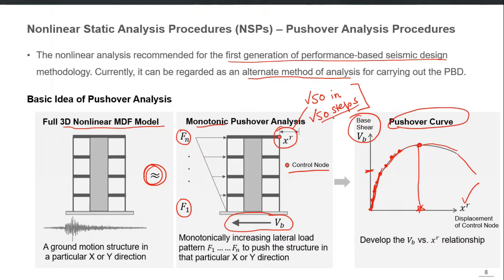When I say 50 steps, the program solves F = Ku fifty times. The difference from linear elastic analysis is that k does not remain constant — k degrades as elements yield or crack. With every push, different elements stop contributing to the stiffness matrix k because they get damaged, so the k matrix is degraded each time there is a new push with new damage.